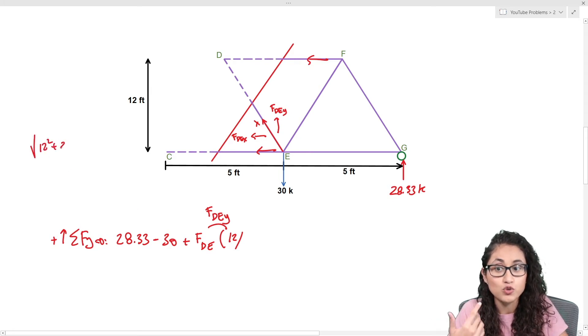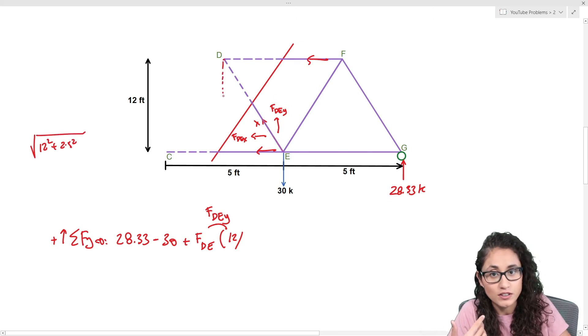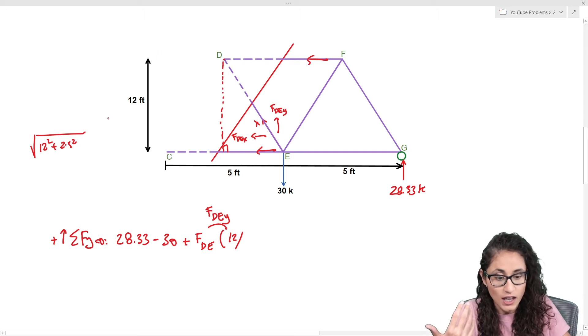When you find the hypotenuse you guys got to be careful because it's actually 12 squared plus 2.5 squared, because it's only this distance here where we have the right triangle. It's half of 5 feet so it's gotta be 2.5 squared plus 12 squared. If you plug this in your calculator you're gonna get 12.25, this is the hypotenuse. So now we're going to do 12 divided by 12.25 and this equals zero.